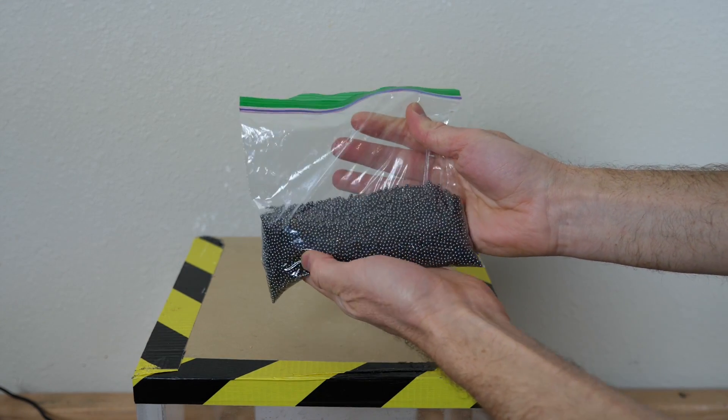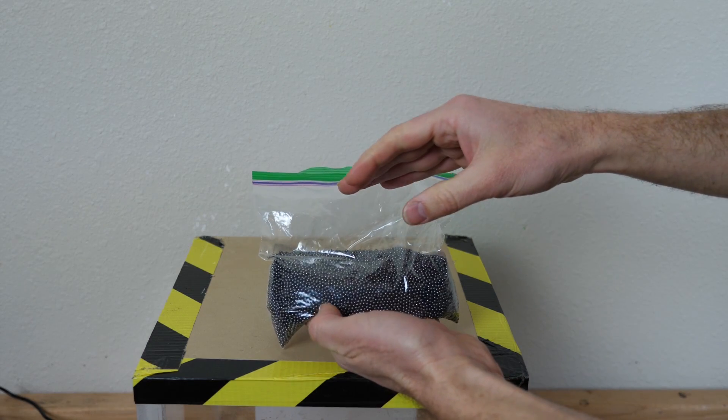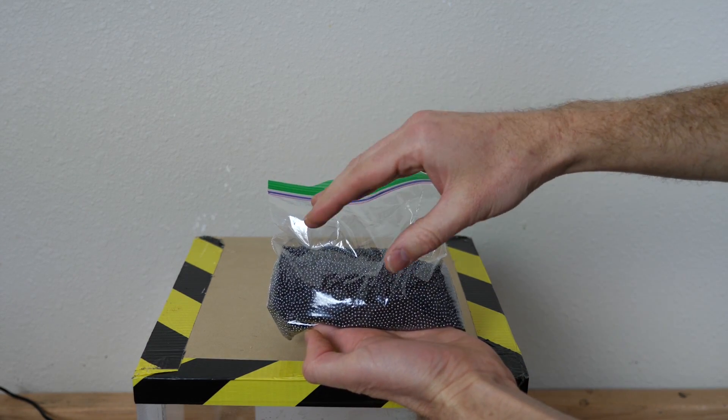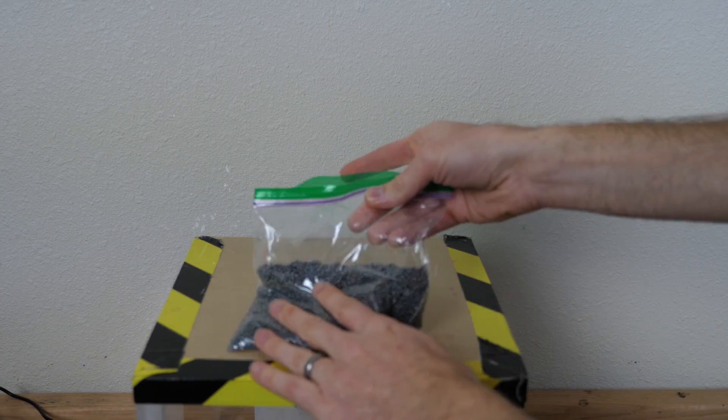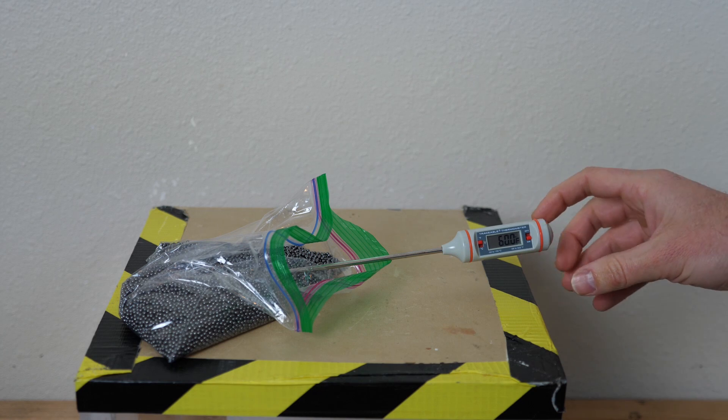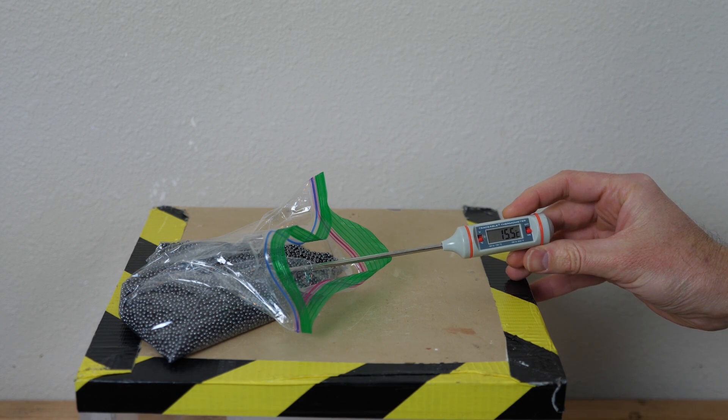I have here a bag of lead shot. The reason I'm using lead is because lead has a very low heat capacity and that means that it doesn't take a lot of energy to change the temperature of the lead. First let's measure the temperature of our lead shot right now. We've got about 60 degrees Fahrenheit. That's about 15 and a half degrees Celsius.